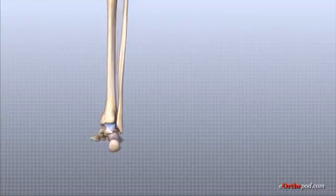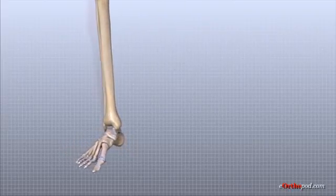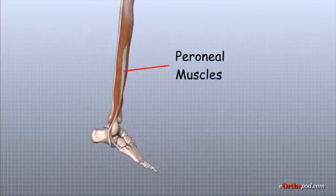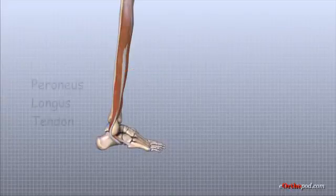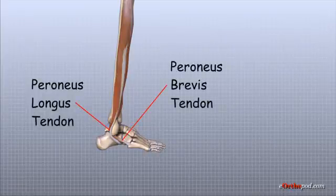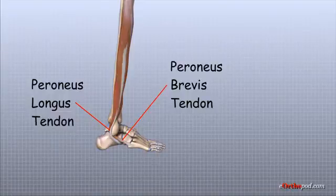The anterior tibial tendon attaches the anterior tibialis muscle to the foot and allows us to raise the foot. The two peroneal tendons run behind the lateral malleolus and help turn the foot down and out. These two muscles and their tendons are called the peroneus longus and the peroneus brevis. The peroneus brevis is the shorter of the two and attaches to the base of the fifth metatarsal, while the peroneus longus runs further before attaching under the foot.